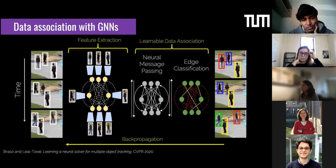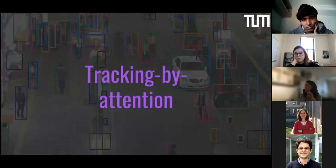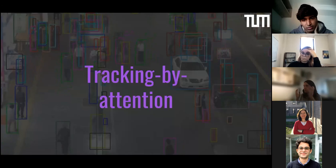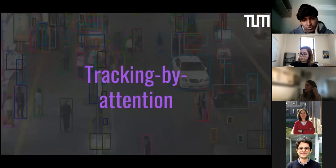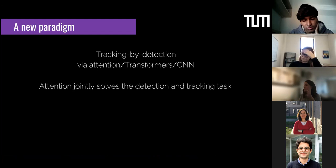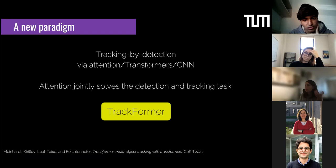So we have transformers for detection and graph neural networks — a superset of transformers — doing data association. Now we want a third paradigm: tracking by attention. Can we actually fuse these two works on detection and data association and really perform tracking with attention, transformers, or graph neural networks? The cool thing is that attention will jointly solve the detection and tracking tasks — they will no longer be separate, though I will still use the concept of tracking by detection.